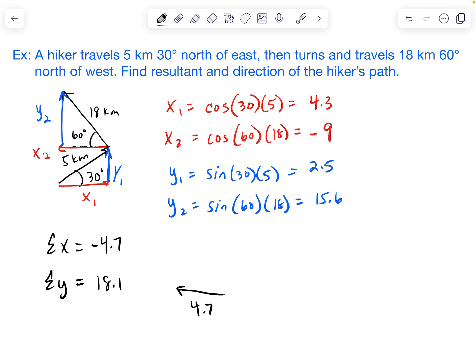And remember, whenever we add vectors, we're going to add them head to tail. And so my y is 18.1. This is going to give us a right triangle, or at least a right angle. And then the hypotenuse here completes that right triangle. That's the resultant.